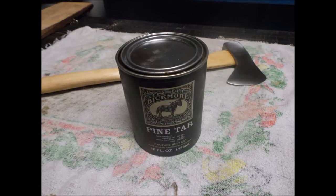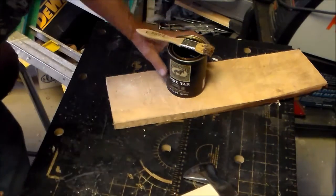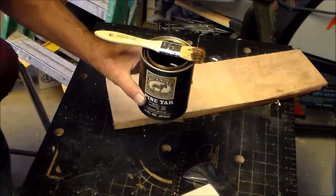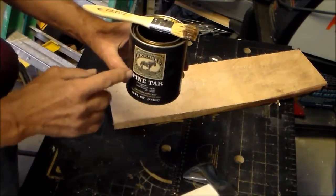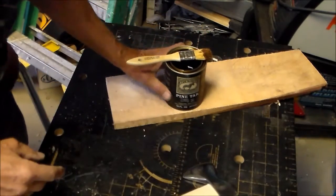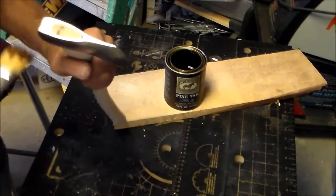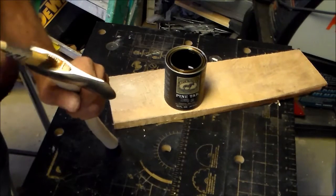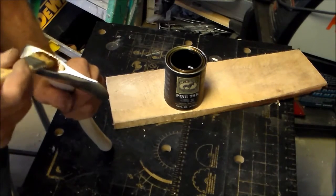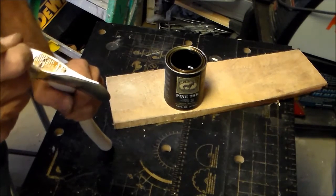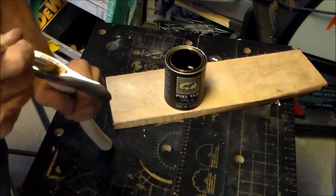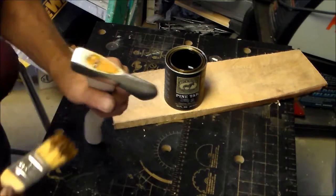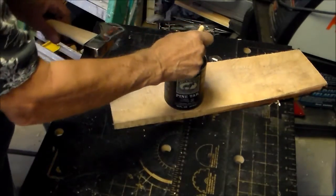I treat my wooden tool handles with pine tar which is available on the internet. Now what I like to do on my axe handles is coat them, or even hammer handles, coat them with pine tar. And this pine tar, it's a product of distilling or heating up pine wood and distilling that sap that's in there, the resin. And it comes out as like an oil, or they call it the pine tar.